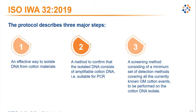The DNA isolated from these materials is then used for PCR analysis. The second step is a method to confirm that the DNA extracted from the sample still contains amplifiable cotton DNA suitable for PCR analysis. The third step is a screening method to detect all currently known GM cotton varieties.